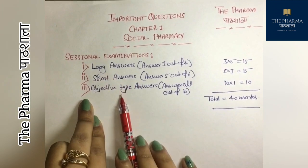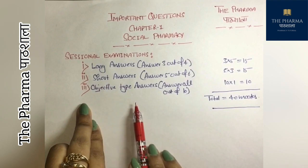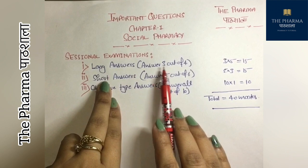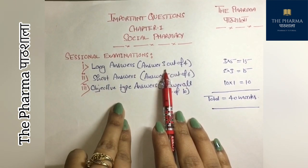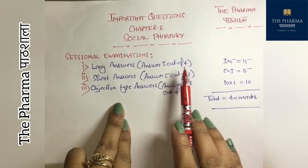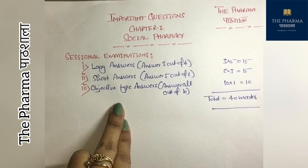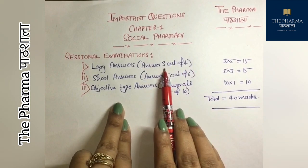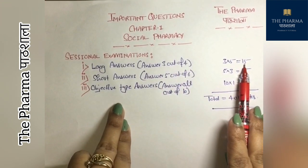There are three types of questions: long answers, short answers, and objective types. For long answers, there are a total of 4 questions worth 5 marks each. There are 4 questions but only 3 attempts required. So the total marks for long answers are 15 marks.